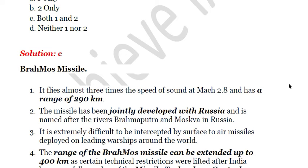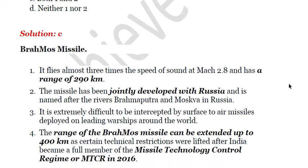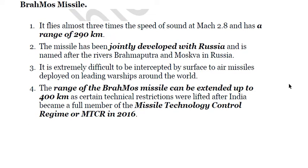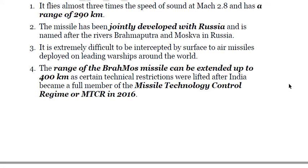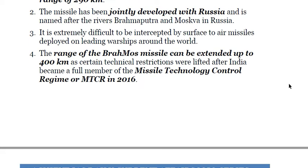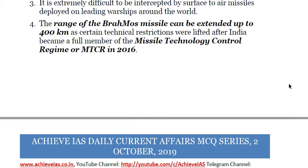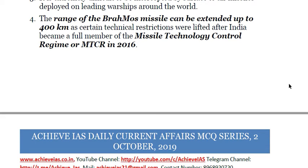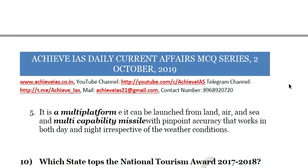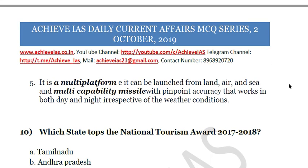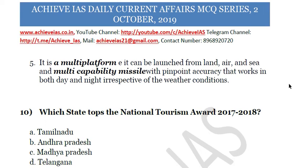BrahMos was jointly developed by Russia and India and is named after the rivers Brahmaputra and Moskva. It is extremely difficult to intercept by surface-to-air missiles deployed on leading warships. The range can be extended up to 400 kilometers as certain technical restrictions were lifted after India became a full member of the Missile Technology Control Regime (MTCR) in 2016. It is a multi-platform missile that can be launched from land, air, and sea, with pinpoint accuracy working in both day and night irrespective of weather conditions.